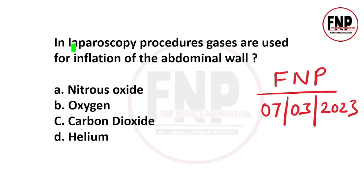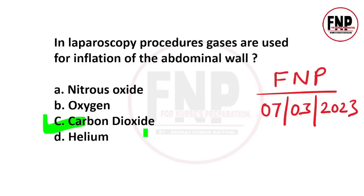Our first question is: in laparoscopy procedures, gases are used for inflation of the abdominal wall. If a client has laparoscopy surgery, which gas can be used to inflate the abdominal area? Options are nitrous oxide, oxygen, carbon dioxide, or helium. The right answer is option C, carbon dioxide.